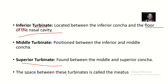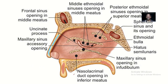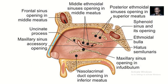So now the spaces between these turbinates are called the meatus. This is where the meatus are actually located. What are the structures that actually open into the meatus? It's what we'll be talking about.